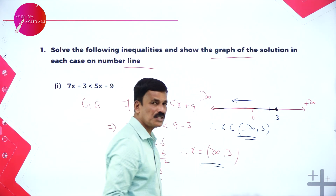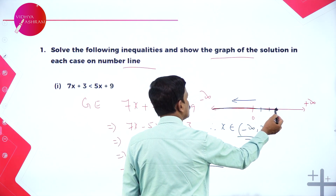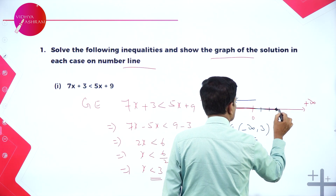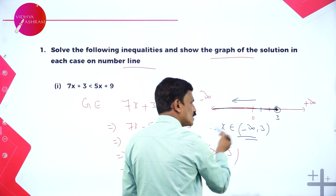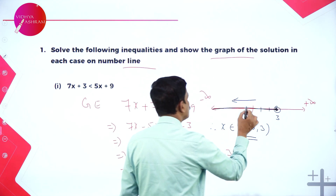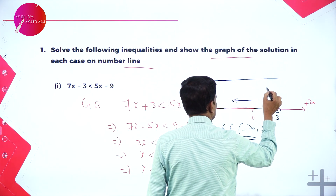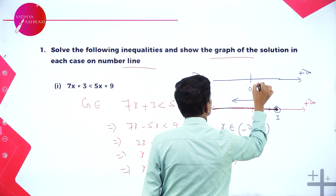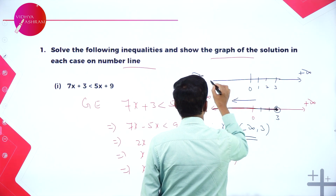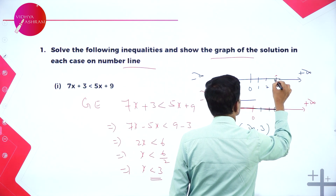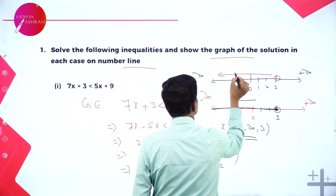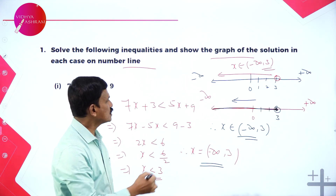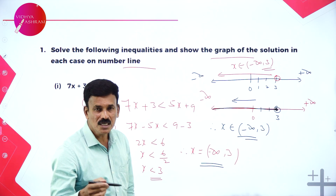The solution set is x ∈ (-∞, 3). On the number line we mark 0, 1, 2, 3 and since it is an open interval at 3, all values less than 3 extend towards minus infinity. So x belongs to minus infinity comma 3 is the solution set. This is the graphical representation of the solution set on the number line.